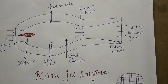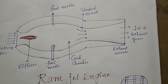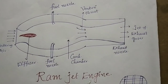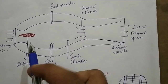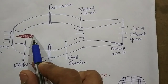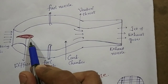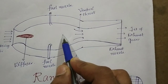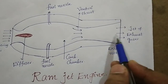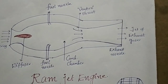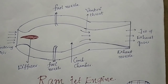First of all, let's see what parts are there in the ramjet engine. There are mainly three parts in the ramjet engine. The first one is the diffuser, then the combustion chamber, and here we are using the nozzle. These are the main, very important parts.